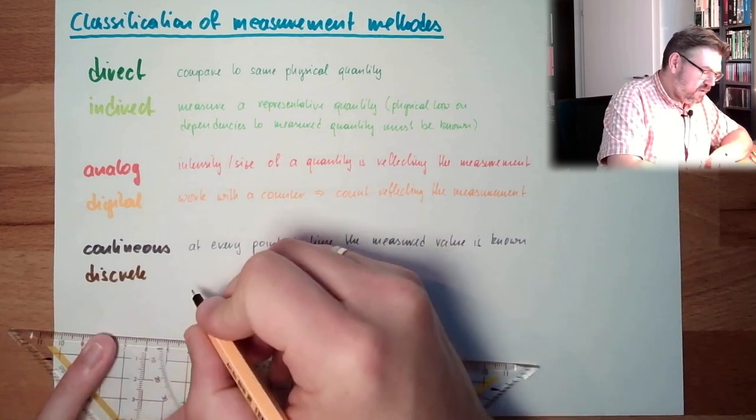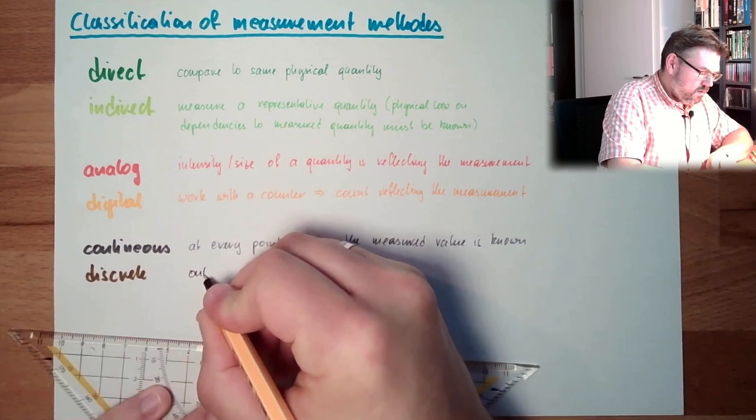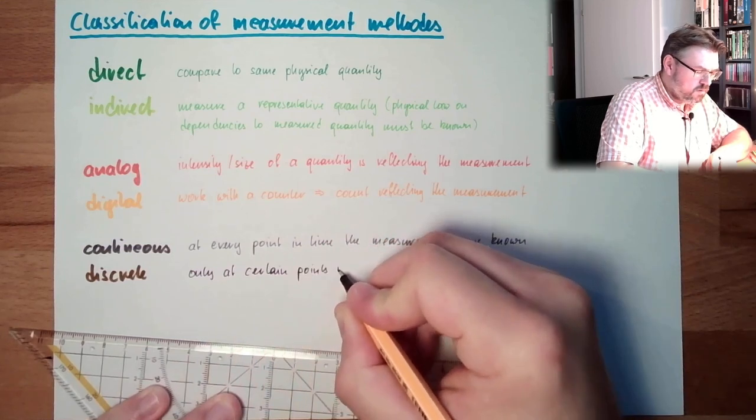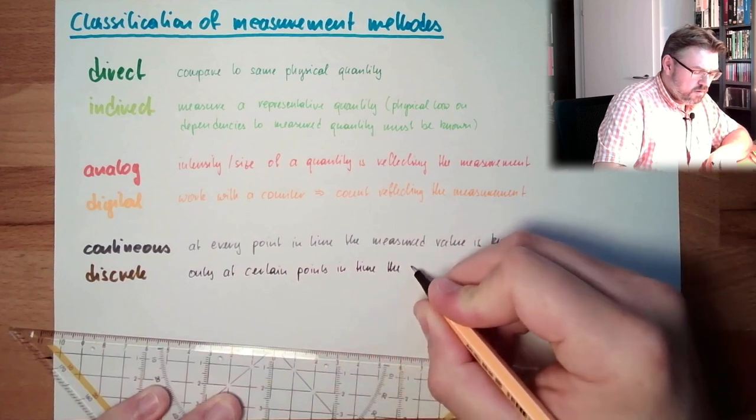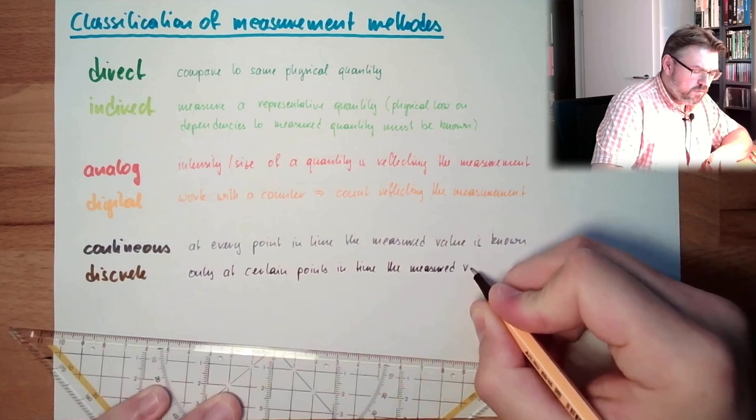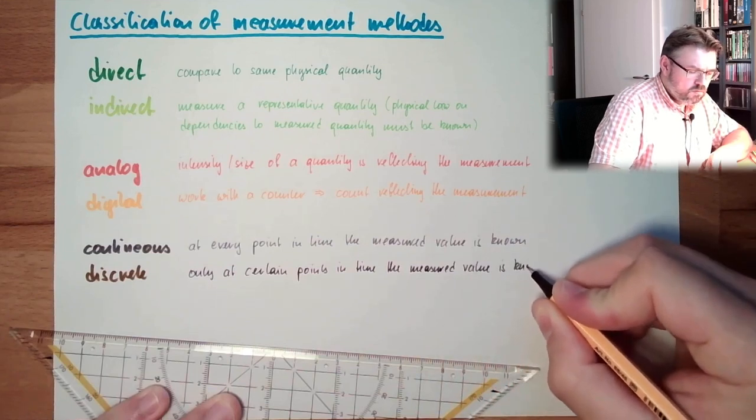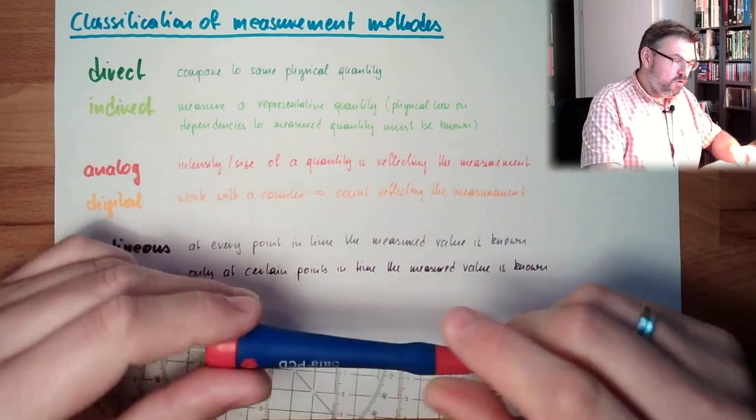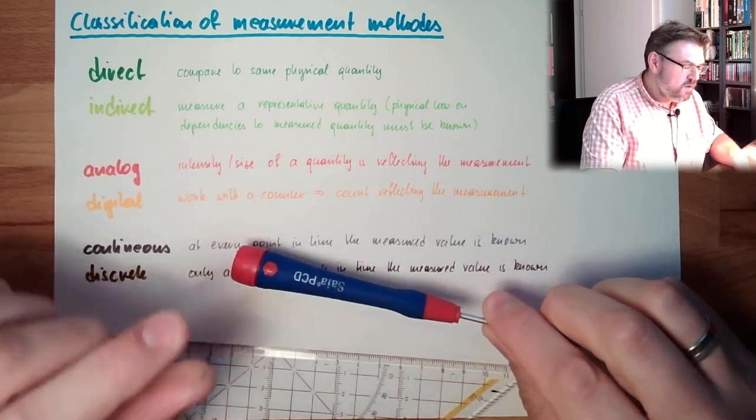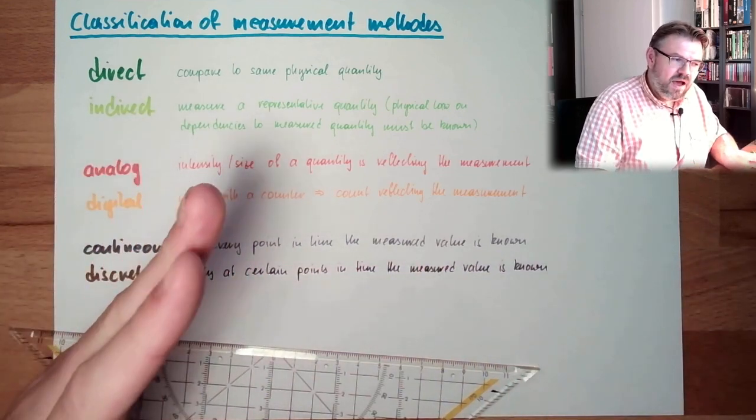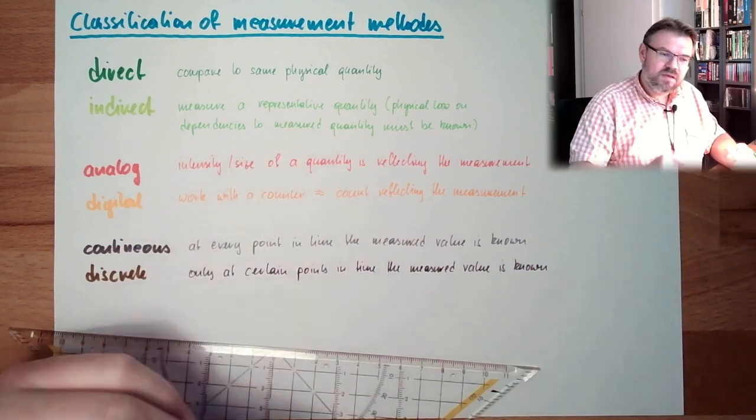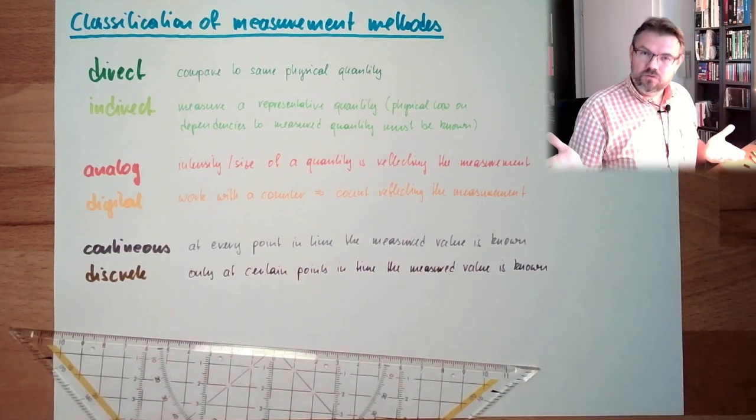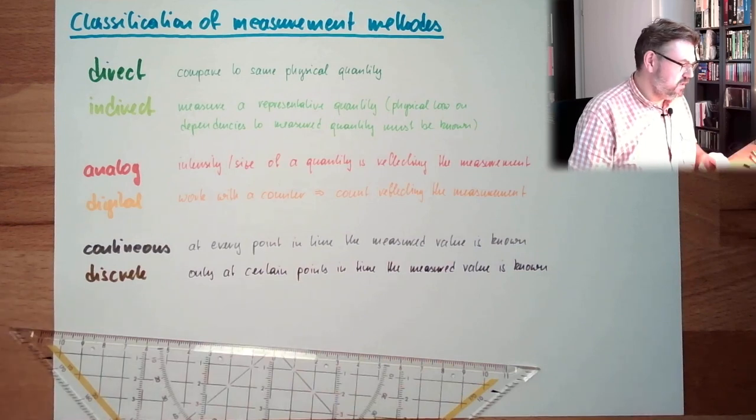Discrete value means only at certain point in time the measured value is known. What do I mean? For instance, digital measurement. I said we are counting for a while and then determine the rotating speed. So during the period I'm counting, I don't know the rotation speed. After the period I'm counting, at exactly this point in time, I know the rotation speed. And then, in the next period of counting, I don't know the rotation speed, I only know it afterwards. This would be time discrete.